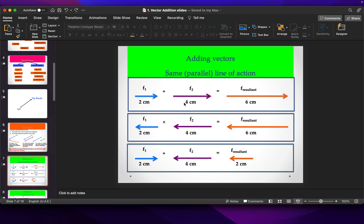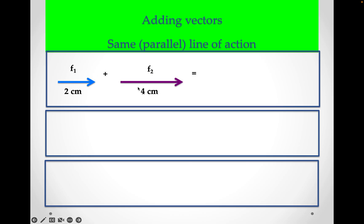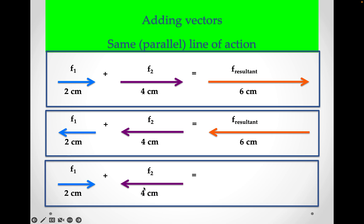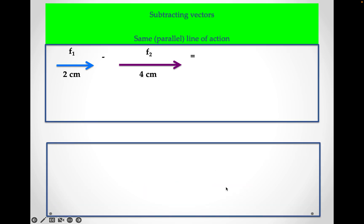Adding, we will do 2 plus 4. They're in the same direction, the result will be 6. If they're both going to the left, it'll be the same thing, the result will be 6 to the left. If we have 2 centimeters right and 4 centimeters left, now they're opposite directions, so you'll have to subtract them. The result will be 2 centimeters to the left because this is bigger than this.